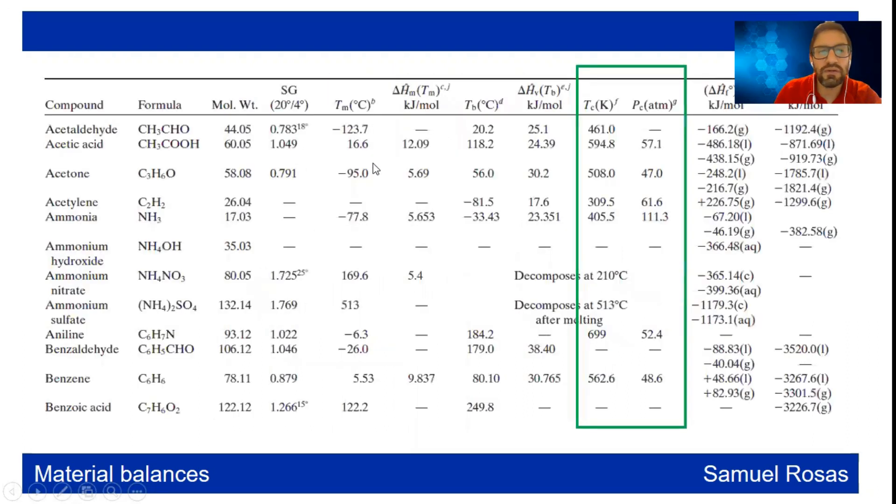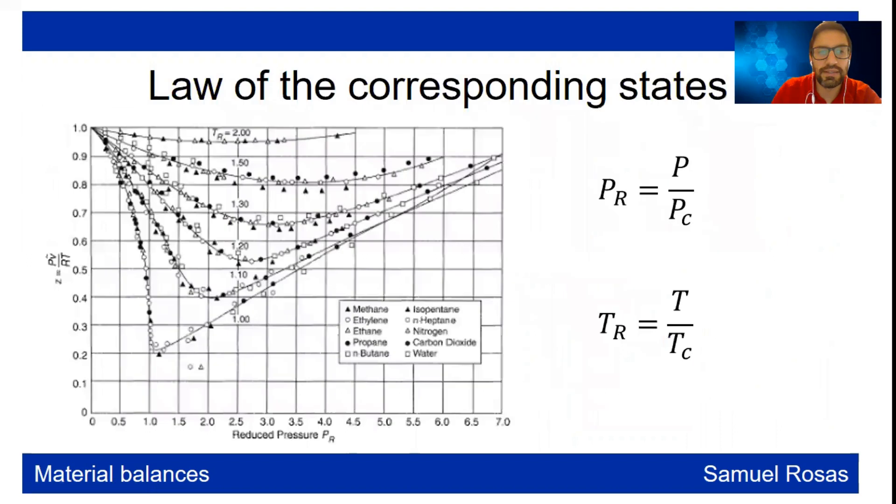This is relevant because in our table we can have values of the critical temperature in Kelvin and the critical pressure in atmospheres, and we're going to be using those in order to determine the compressibility factor z. Just imagine that all the gases are going to be behaving differently at certain temperature and pressure. It's not the same to have air or nitrogen and to have water at normal temperature. Air is going to be a gas but water is probably a liquid.